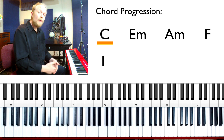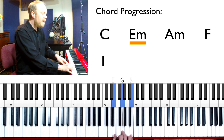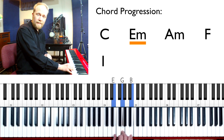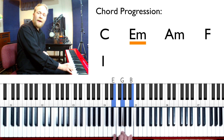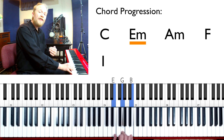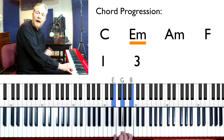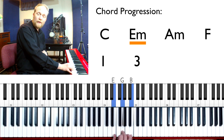The next chord was the E minor chord. The E minor chord has E as its root, and E is the third step up in the key of C. So E minor is actually the three chord — or we can call it the three minor chord, because it's a minor chord.